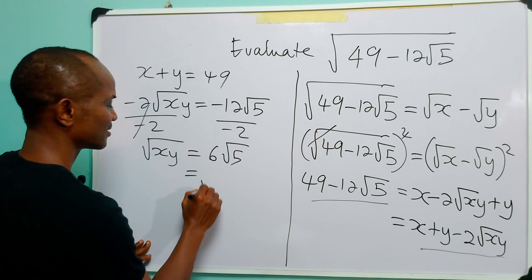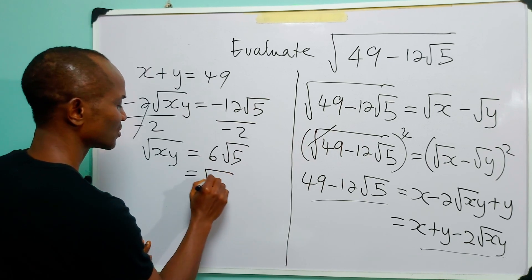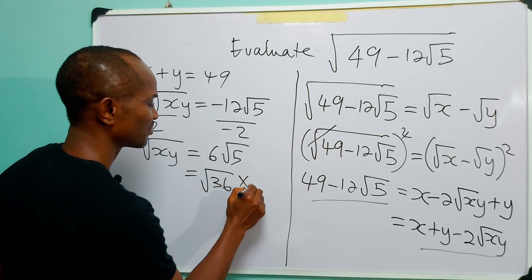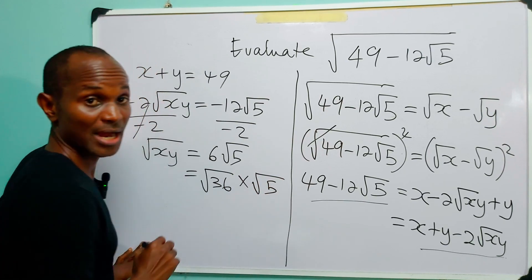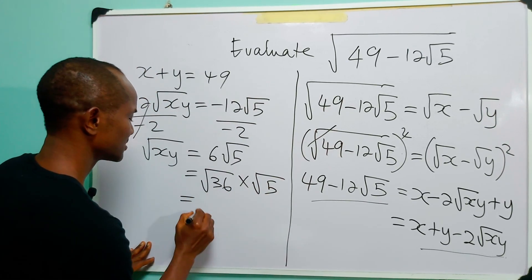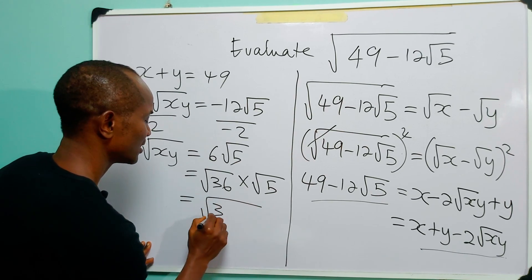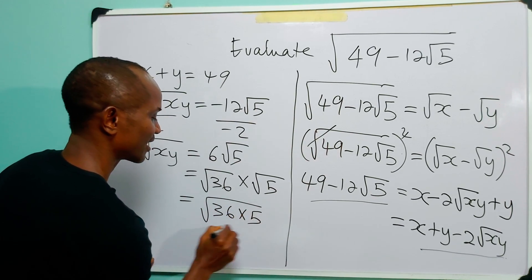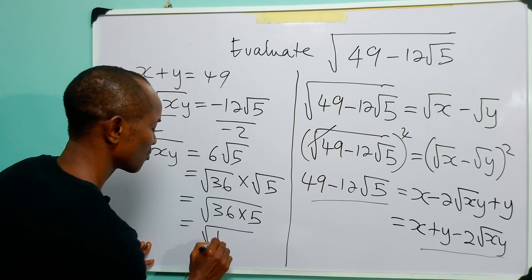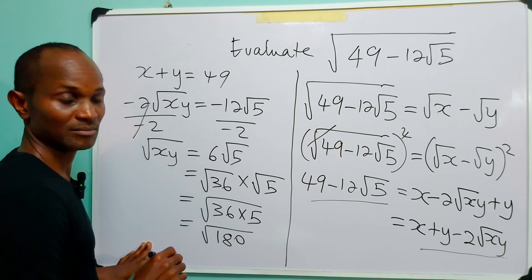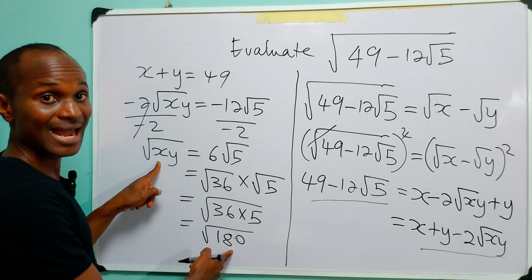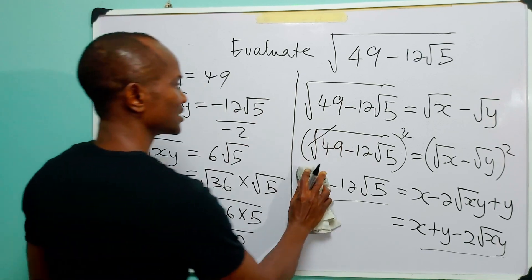This gives us that root(xy) is equal to 6 root 5. We can write this as root 36 multiplied by root 5, and from our laws of surds we know that this is the same as root(36 times 5), which equals root 180. So 180 must equal xy, and that is our second equation.